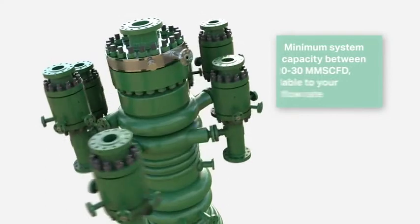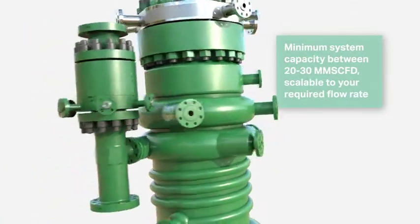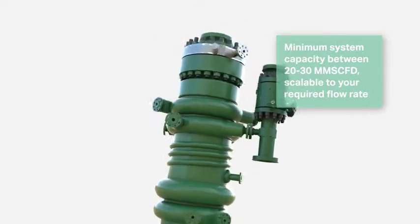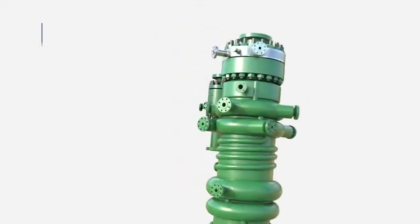Up to six Twister supersonic separators operate around a single Twister hydrate separator. The Twister automatic control system enables complete control from the central plant.